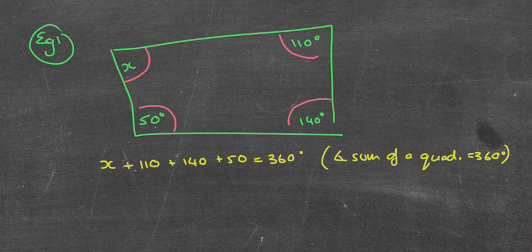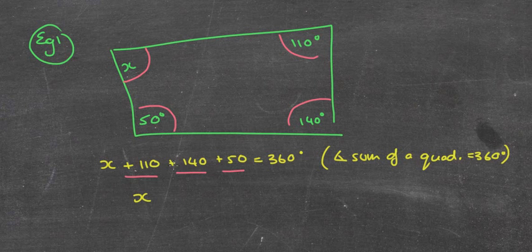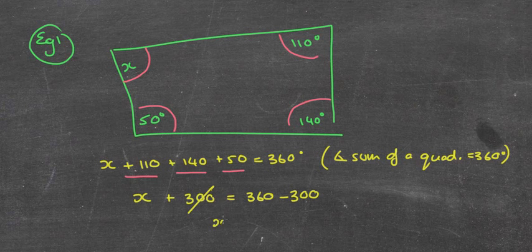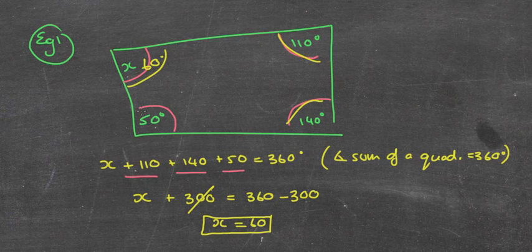This looks a bit messy, so I'm going to add 110, 140, and 50 together. You may wish to take them away directly from 360, but I'm going to add them to clean it up. So 50 plus 140 is 190, plus 110 is 300. So x plus 300 equals 360. Subtract 300, and x equals 60 degrees. You can now see x plus 110 plus 140 plus 50 equals 360 degrees. Job done.